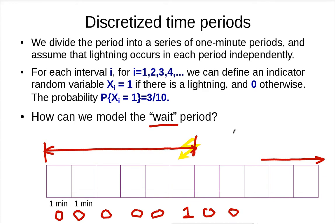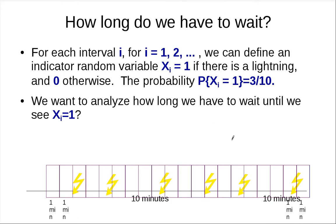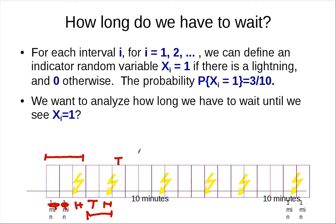So how are we going to model this? This is something pretty close to what we've done before. We're talking about how long we have to wait until something good happens. This is like tossing a coin — you get tail, tail, then head. So that's two periods of wait. We want to analyze how long we have to wait until we see a 1. For example, with probability 0.3, you might get tail, tail, tail, and then head — so you'd have to wait four periods.